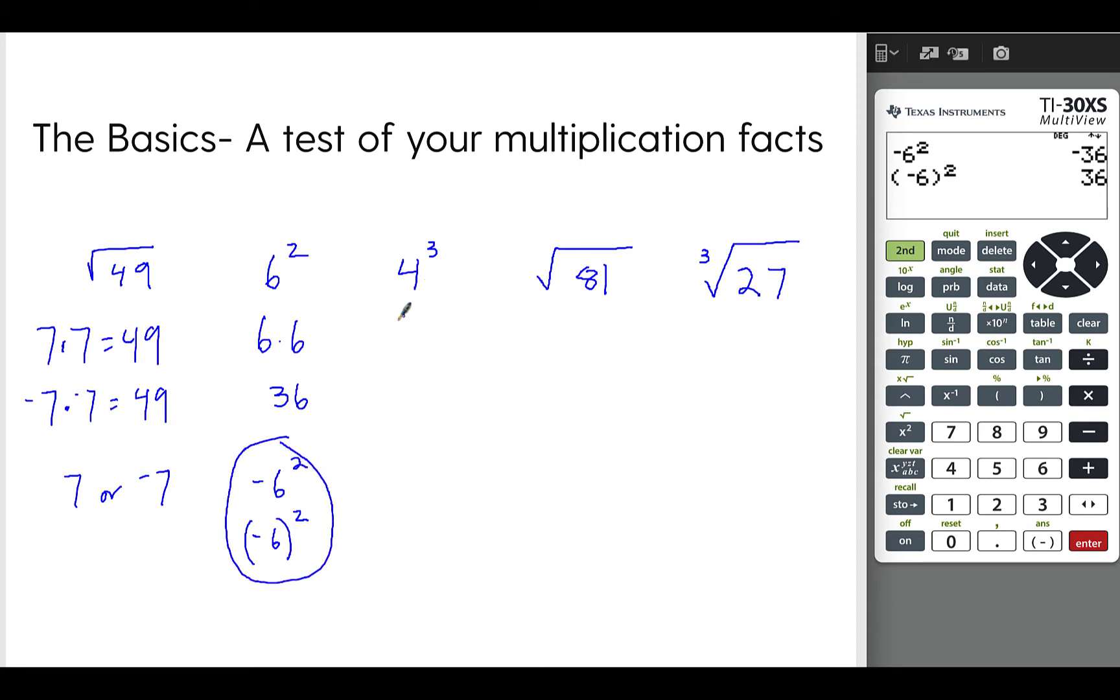So 4 to the 3rd. This is a question to you: What is the answer if you take 4 times 4 times 4? Let's do the calculator first this time. You could do 4, here, this little upside down V, that's the exponent sign. So you could put a 3 in here. And the answer is 64.